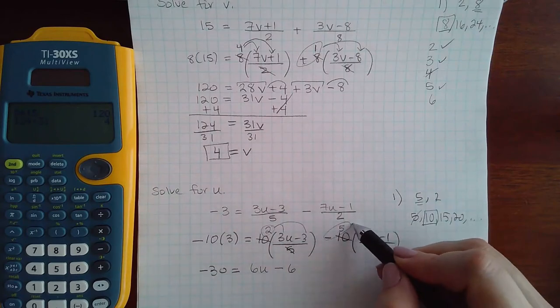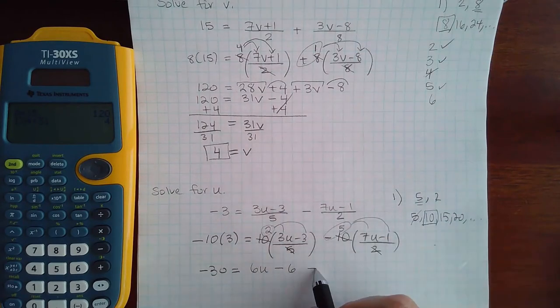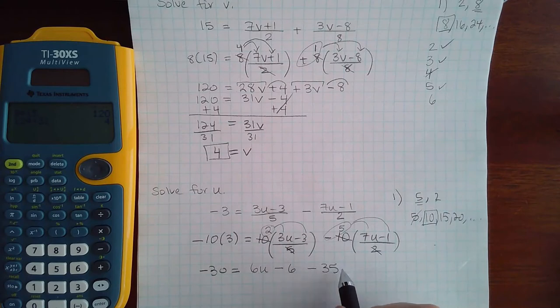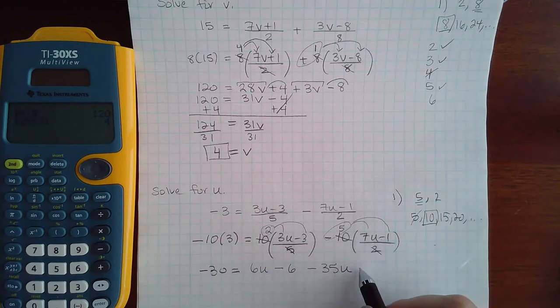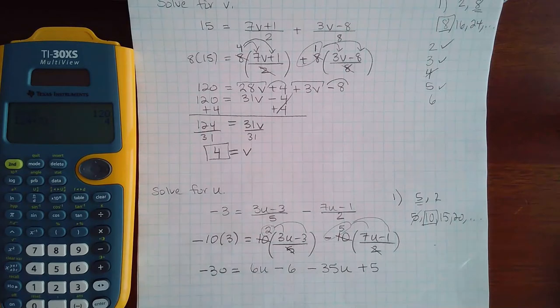So I have a positive 2 that needs to be distributed, which gives me 6u minus 6. And I have a negative 5 that needs to be distributed. So that gives me a negative 35u. And negative 5 times negative 1 is going to make that a positive 5.